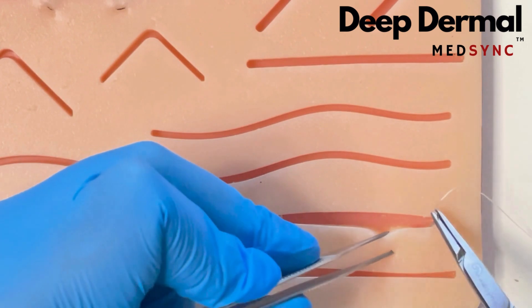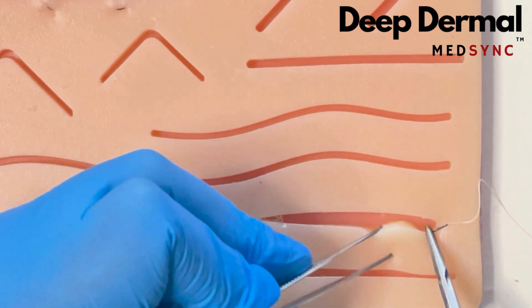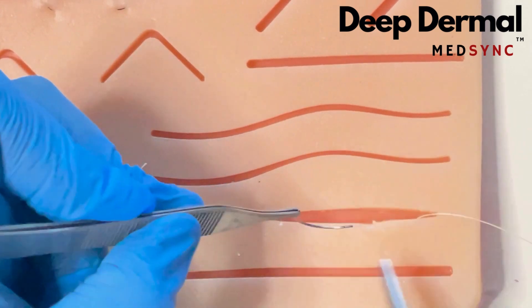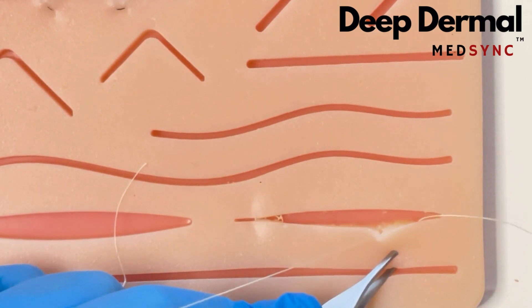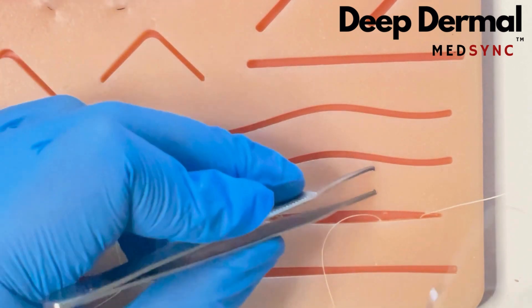The Deep Dermal. This technique buries the knot once it is tied. You start deep and exit superficial on one side.